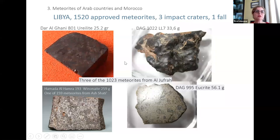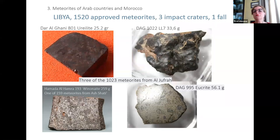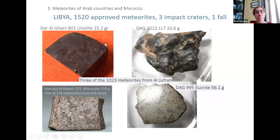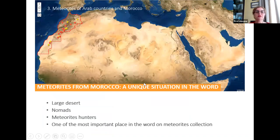Libya also has a large desert and many meteorites — about 1,500 officially — with likely many more. There is one official fall and another not yet official. There are three impact craters in Libya. Dense collection areas include Dar al-Ghani and Hammada al-Hamra, where there are plenty of meteorites.